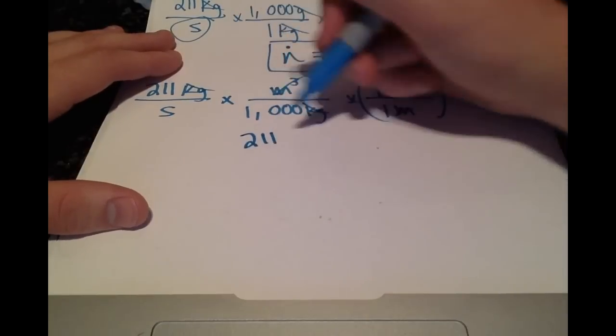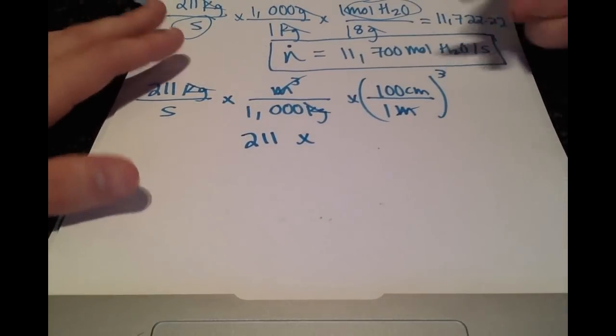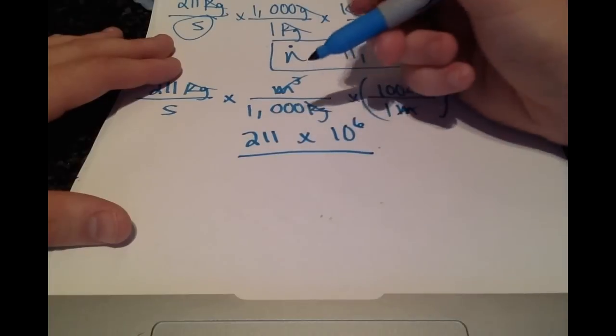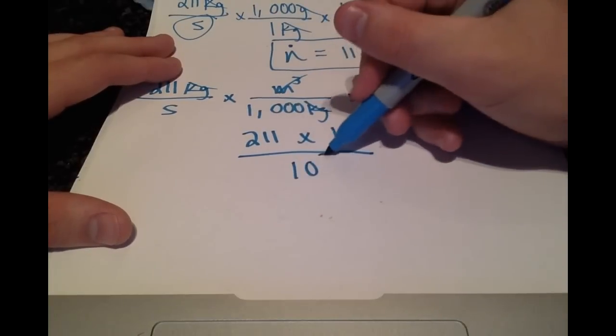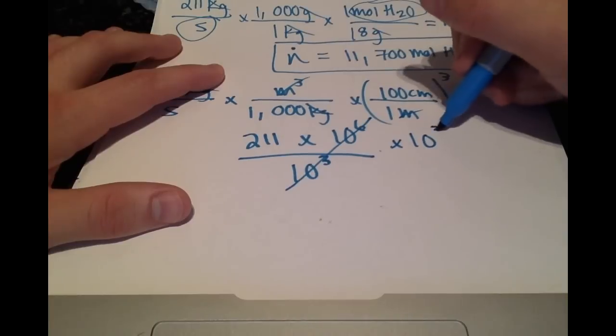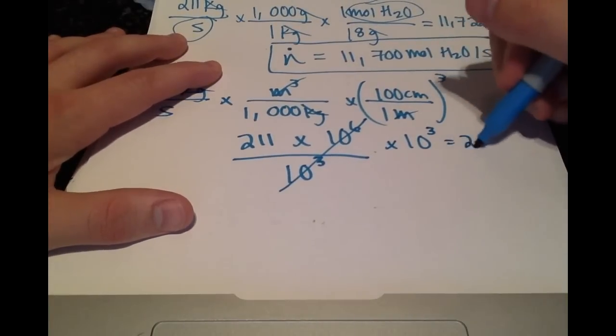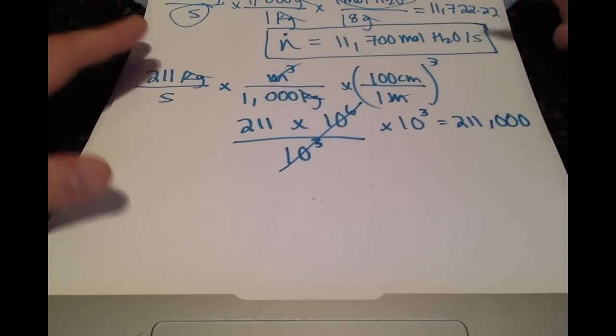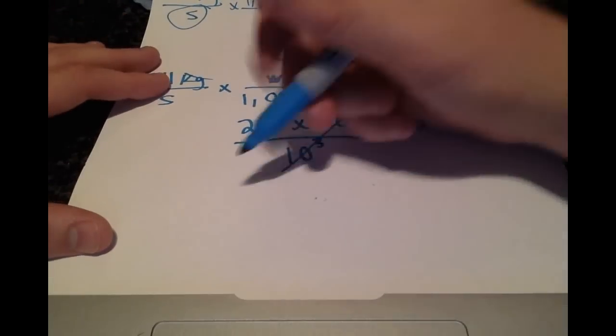So we have 211 times 100 cubed, which is just 10 to the sixth. And in the denominator, we have 1000, so 10 to the third power. Canceling these out, we have 211 times 10 to the third power equals 211,000.